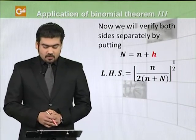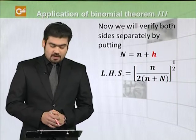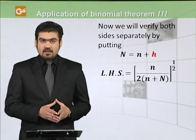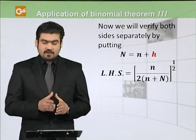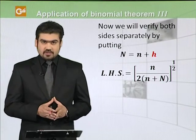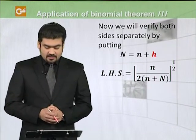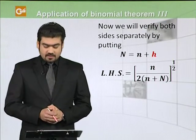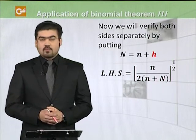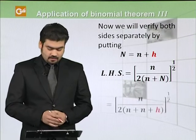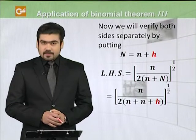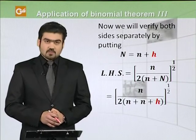Now we will verify both sides separately. Hamna lehda lehda solve karenge aur dekhenge ki jab left hand side right hand side ke equal ho jayegi to hamara statement prove ho jayegi. Aur ye ham karenge by using binomial expansion. So left hand side is: small n divided by 2, multiplied by (small n plus capital N) whole raised to power 1 over 2. Capital N ko hamna replaced kar diya hai (n plus h) ke saath.